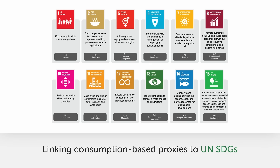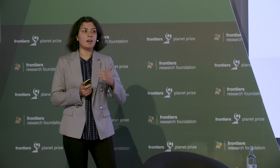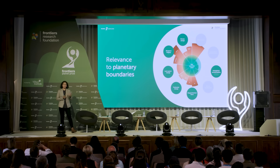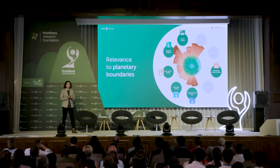We set about to put a consumption lens on the otherwise nationally focused United Nations Sustainable Development Goals. To do this, we identified 12 goals and for each we put a consumption-based proxy — for example, for SDG 1 we had data on poverty, for SDG 13 we had data on greenhouse gas emissions — which we linked to the SDGs for analyzing global supply chain impacts.